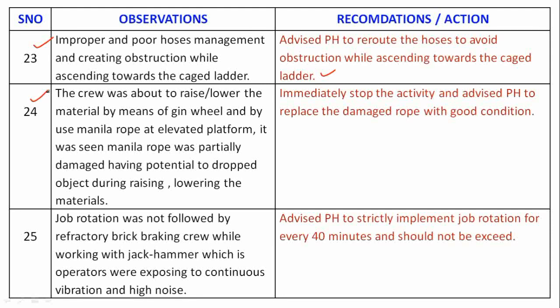Observation 24: The crew was about to raise or lower material by means of a gin wheel using a manila rope at an elevated platform. It was seen the manila rope was partially damaged, having the potential to drop objects during raising or lowering of materials. Recommendation: Immediately stop the activity and advise the permit holder to replace the damaged rope with one in good condition.